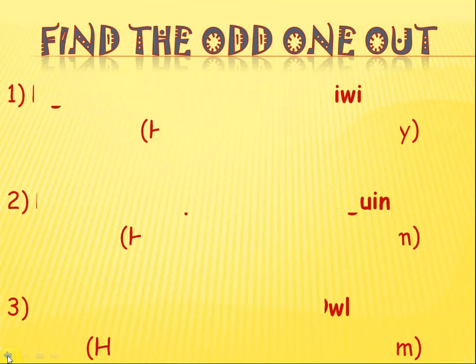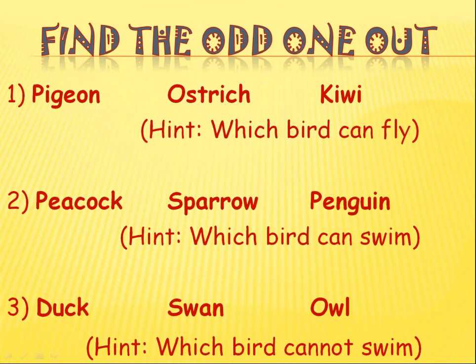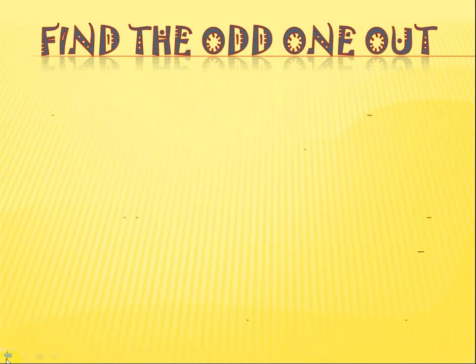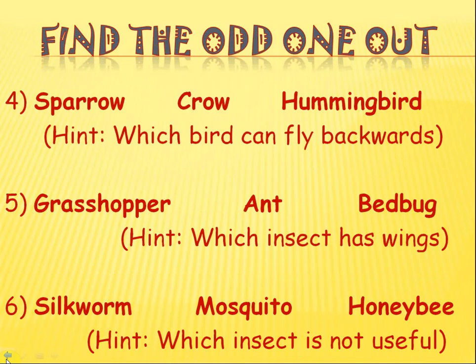The next type of question is find the odd one out. For each question, there are three options given. For the first question, the three given options are pigeon, ostrich, and kiwi. I have also given a small hint in the bracket beneath. Ostrich and kiwi are two birds that cannot fly, whereas pigeon is the bird that can fly. So among the three options, it is pigeon that is the odd one out. There are around six questions for both insects and birds in this category.